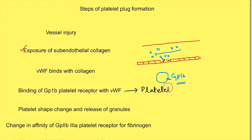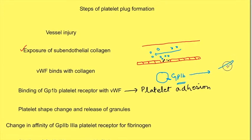The binding of the GP1B platelet receptor with von Willebrand factor is known as platelet adhesion. In platelet adhesion, platelets are binding to the subendothelium by means of GP1B and von Willebrand factor. Because of this binding, there is a change in shape of the platelets, and there is also release of the granules.